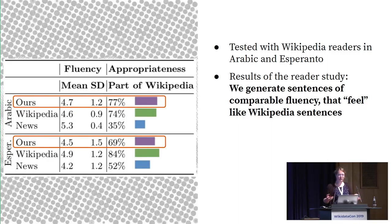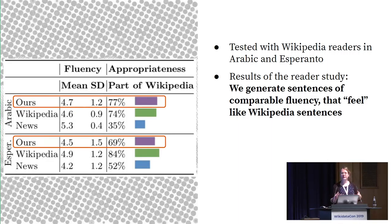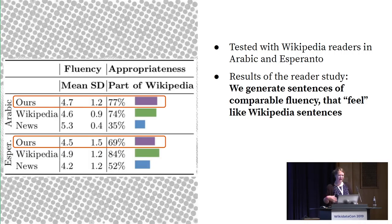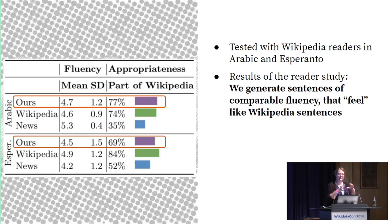We did studies to test if our approach works and makes sense. Because we're very application-focused, we tested it with actual Wikipedia readers and editors. First we tested it with Wikipedia readers in Arabic and Esperanto. We can see that our model generates sentences that are very fluent and feel very much like Wikipedia sentences. We trained on Arabic with the idea to keep the cultural context of that language and not let it be influenced by other languages with higher coverage.